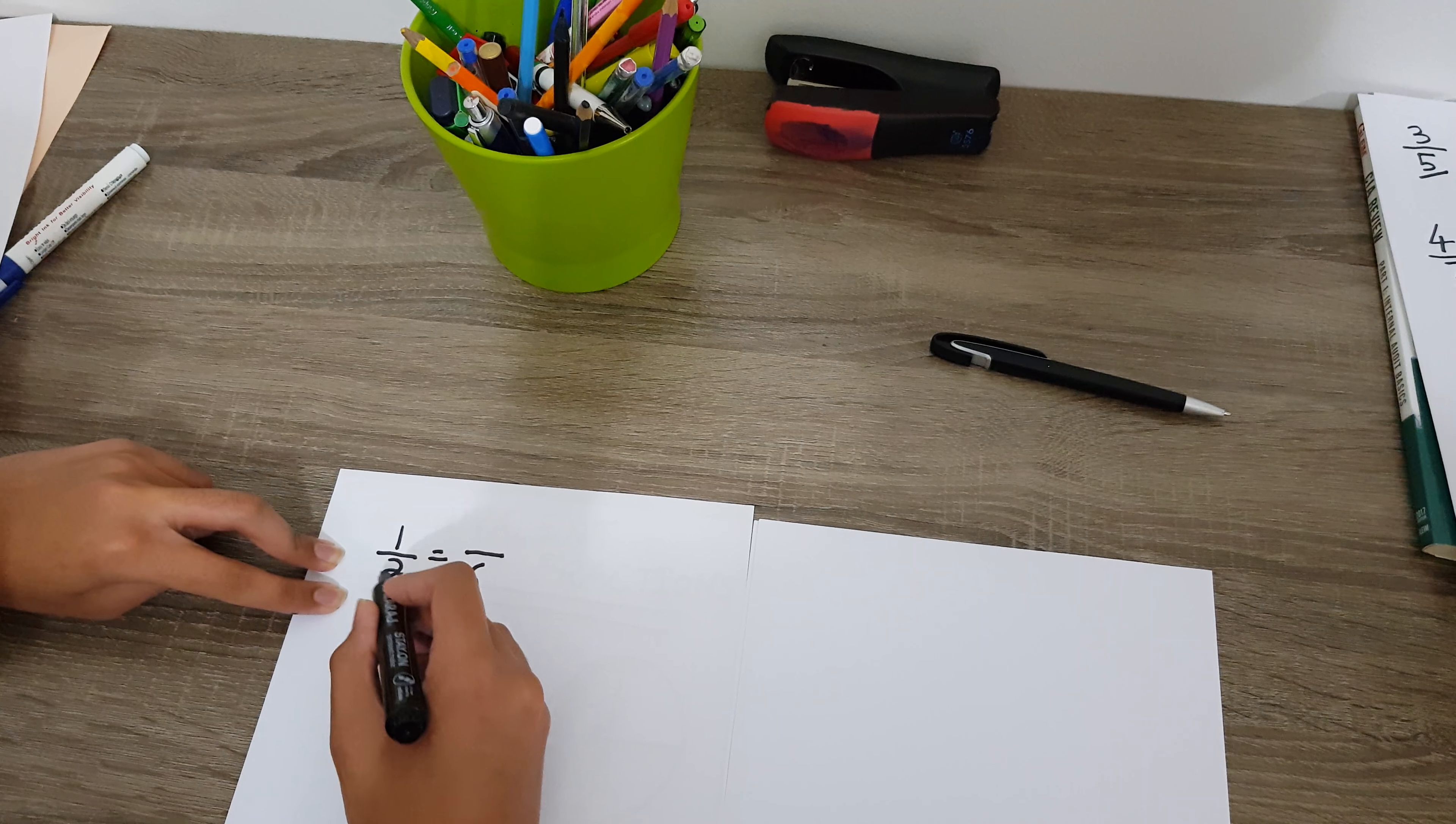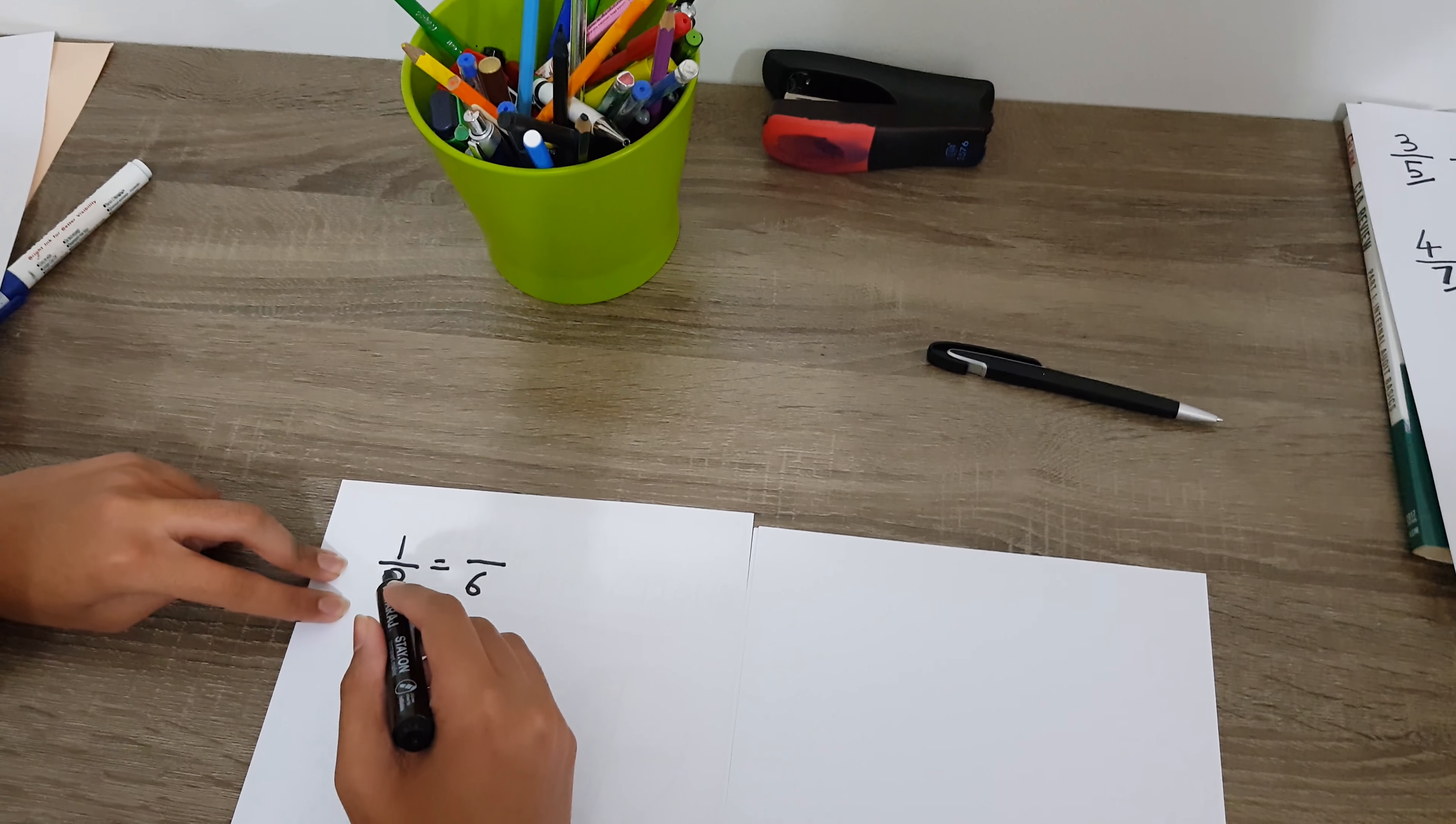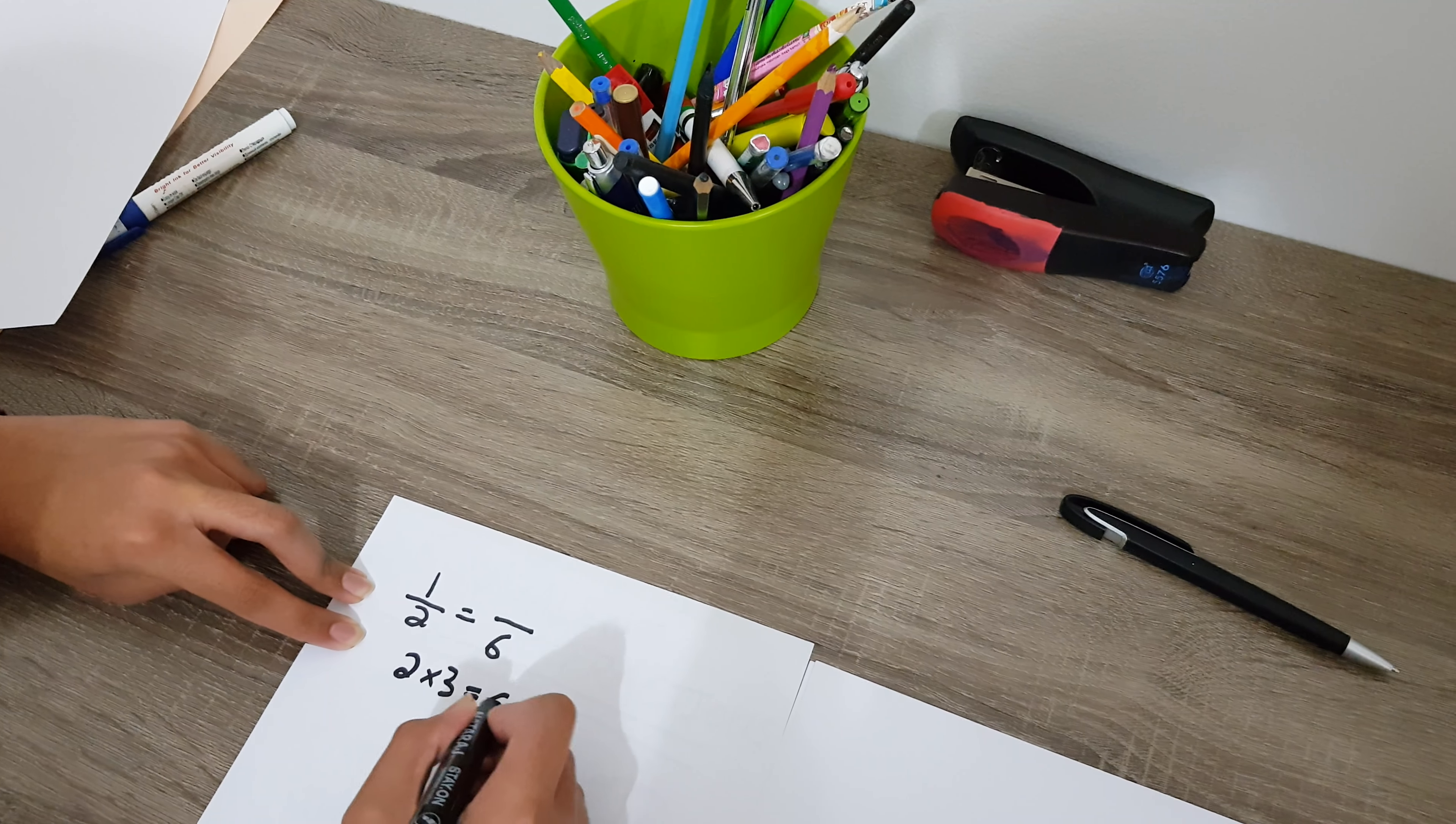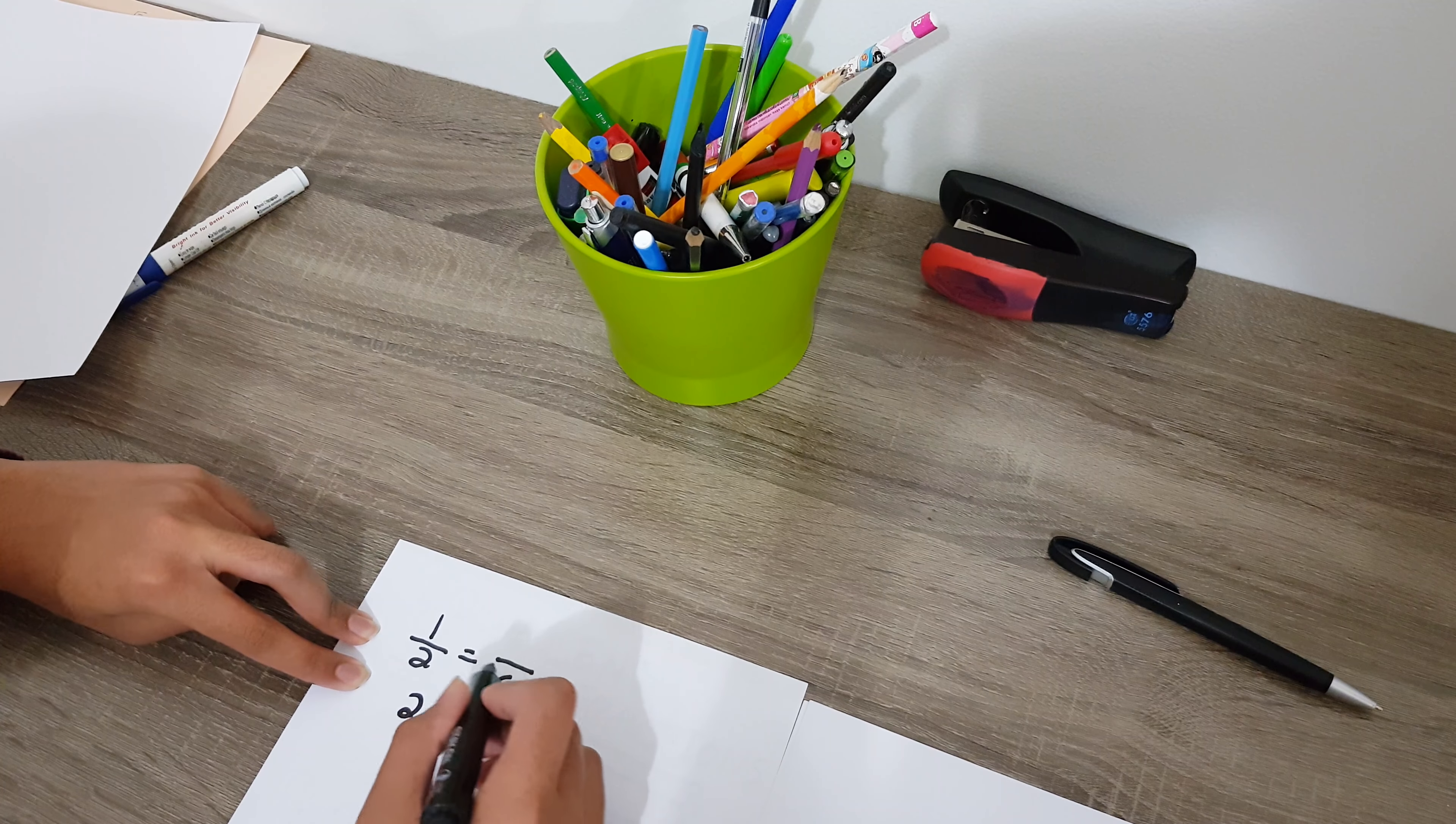Does six come in two's multiplication table? Can two go into six? Two times three is equal to six. So that means we need to multiply this whole fraction by three to get a fraction where we will have